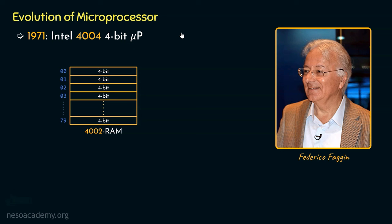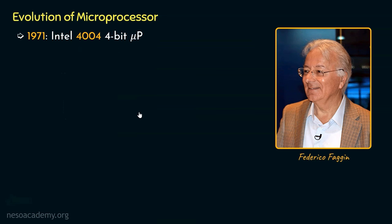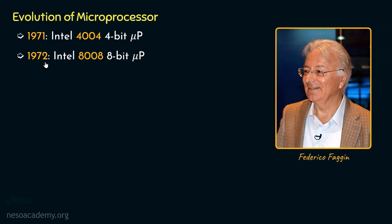Word length defines the size of the binary data that the microprocessor can handle at once. After Intel's 4004, Federico Faggin and his team at Intel designed a new chip for controlling CRT (cathode ray) displays produced by Computer Terminal Corporation, later named Datapoint. However, since that chip didn't meet Datapoint's functional requirements for speed and was rejected, in 1972 Intel introduced this chip as the Intel 8008 — the world's first 8-bit microprocessor.